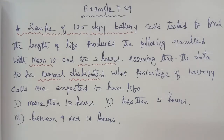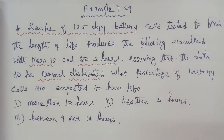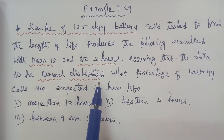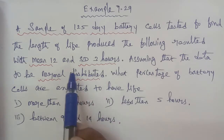Hi students, I am Gopinath. In this tutorial, Business Math Example 7.29. A sample of 125 drive battery cells were tested to find the length of life, producing the following results with mean 12 and standard deviation 3 hours. Assuming the data to be normally distributed, what percentage of battery cells are expected to have life: Submission 1 - more than 13 hours, Submission 2 - less than 5 hours, Submission 3 - between 9 and 14 hours.